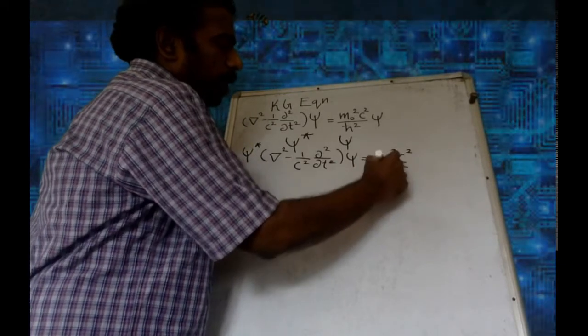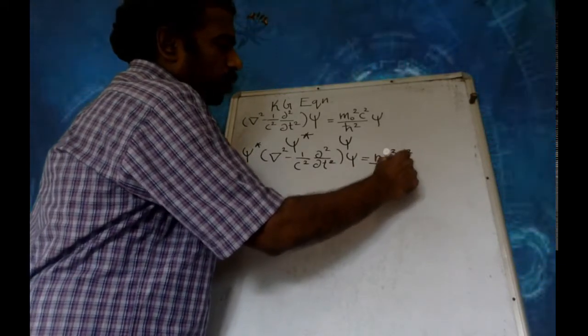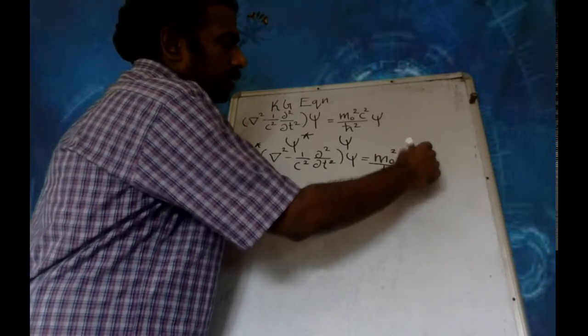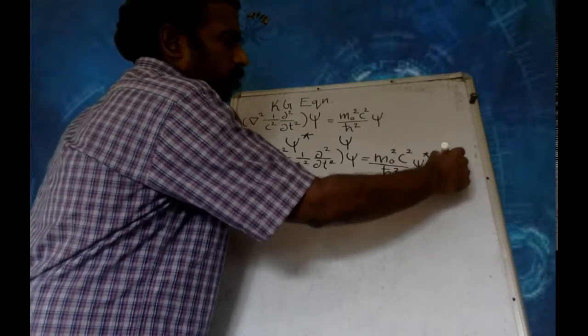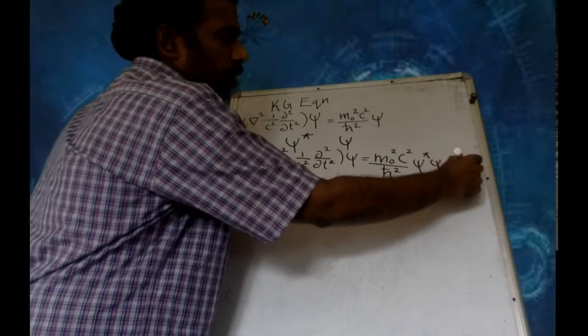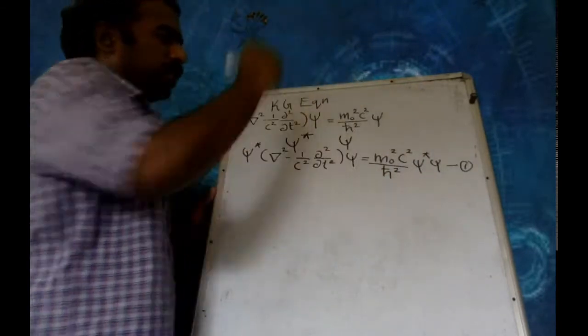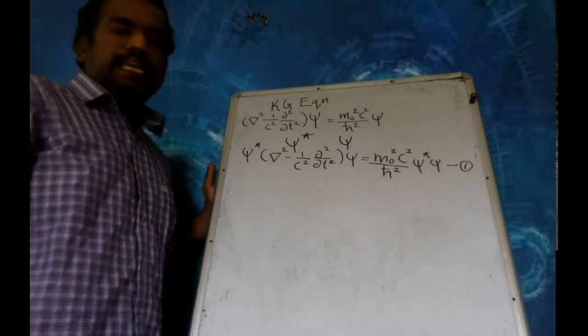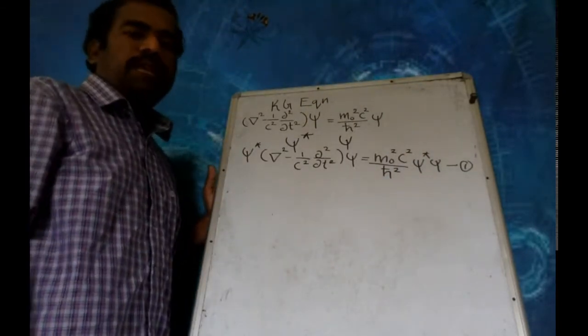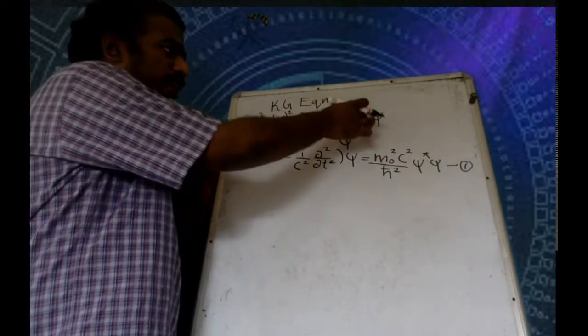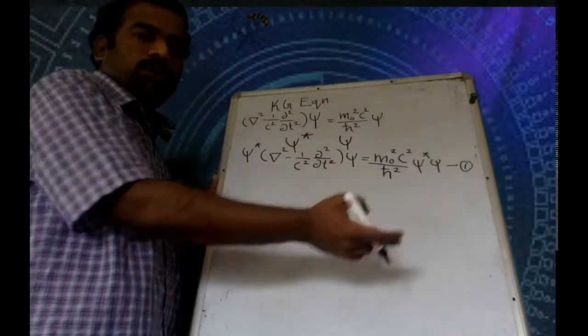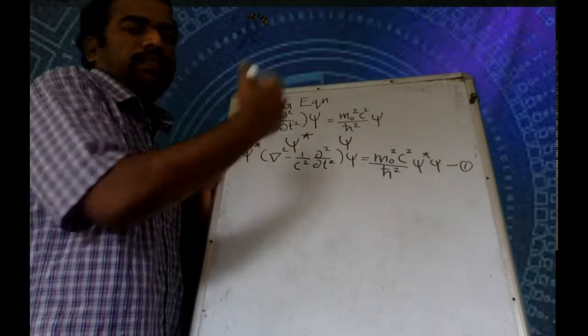You get: psi-star del-squared minus (1/c²)(∂²/∂t²) psi = (mc/ℏ)² psi-star psi. So this is equation one.